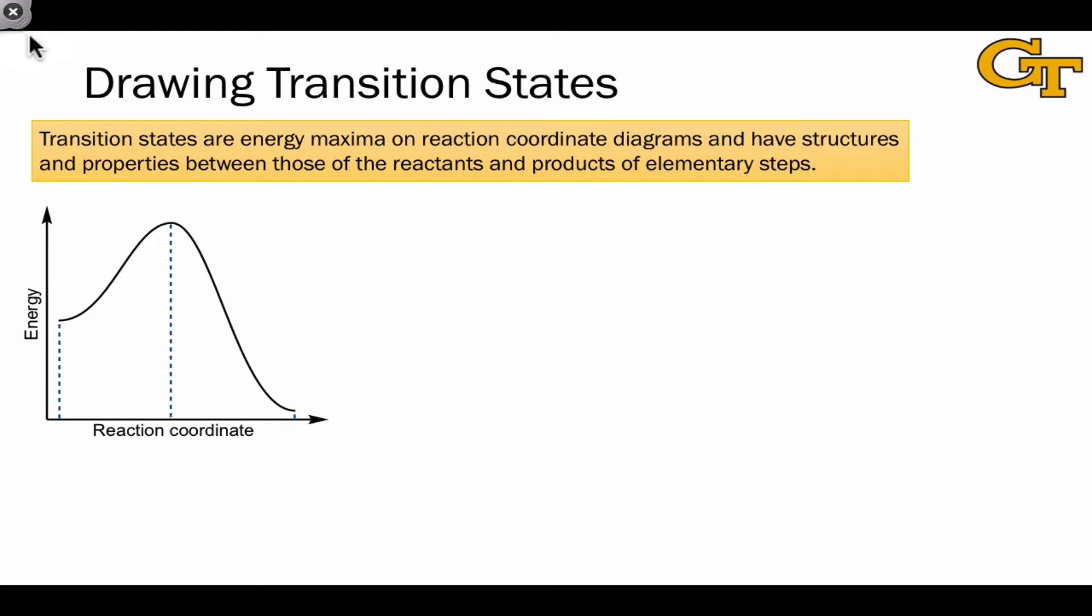But to appreciate how to draw transition states, it actually helps to focus more on the x-axis, on the reaction coordinate axis. Notice that the transition state's reaction coordinate is somewhere between the reaction coordinate of the reactants and of the products.